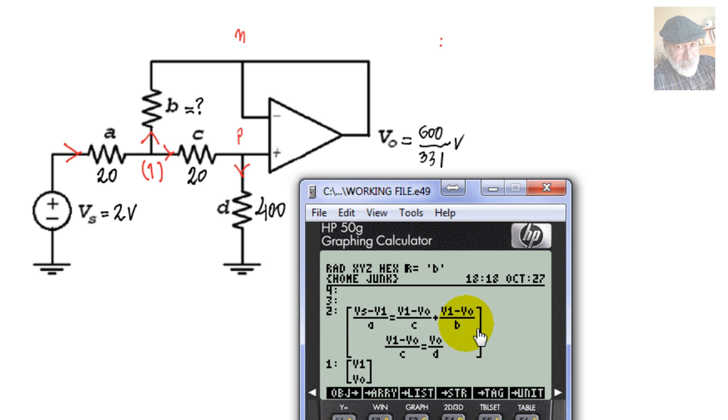For node p, there are only two currents. One going in: v1 minus v0 divided by C. That is equal to the only current leaving vp, which is v0 divided by D. What about this one? That current is zero. The current entering the op-amp, an ideal op-amp, is zero. So we have two equations and two unknowns we can solve for.